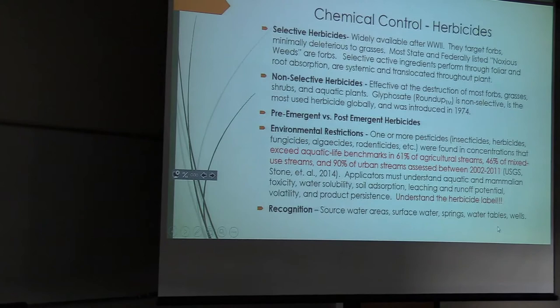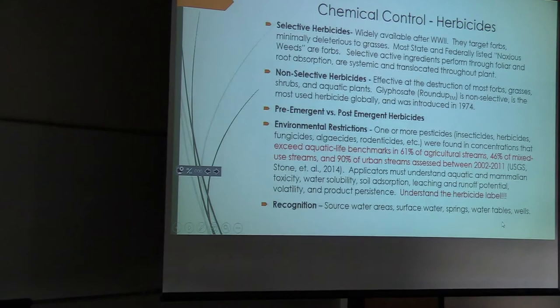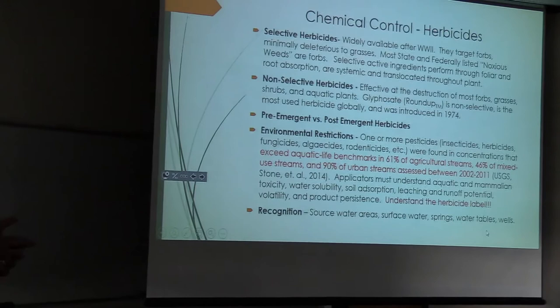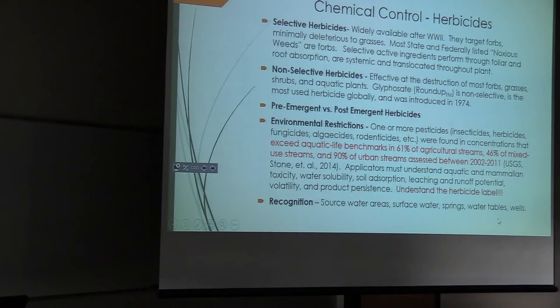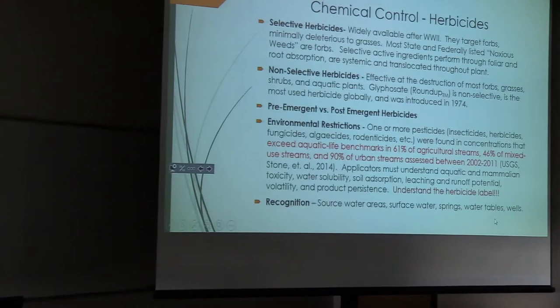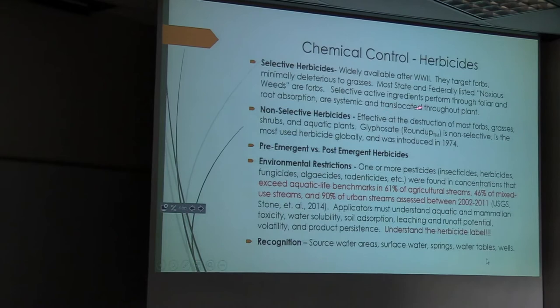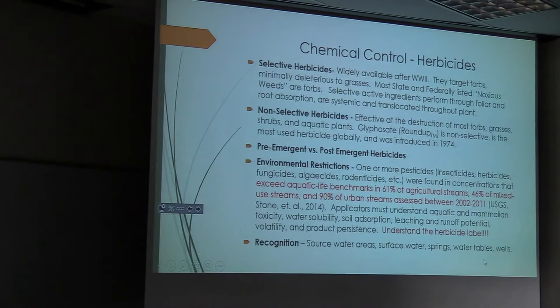We have selective herbicides that are designed to affect forbs without injuring grasses. Most noxious weeds are forbs, so you can apply a selective herbicide at an appropriate rate that will injure your target forb species but not your grasses. They're absorbed through foliar or root absorption and are typically systemic, meaning the active ingredients are translocated into the roots — a highly effective tool.